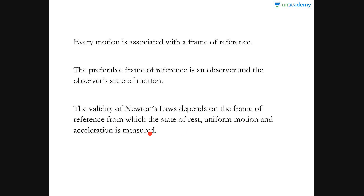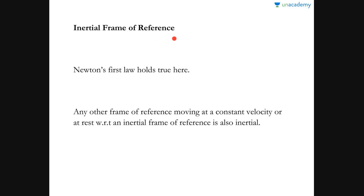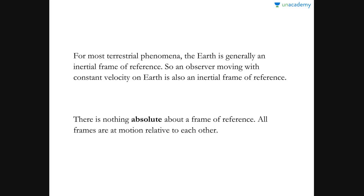There are certain frames of reference where Newton's laws hold true and certain where they do not. There are two types of frames of reference. The first is the inertial frame of reference, in which Newton's first law holds true. Any other frame of reference moving at a constant velocity or at rest with respect to an inertial frame is also inertial. For most terrestrial phenomena, the earth is generally considered an inertial frame of reference.